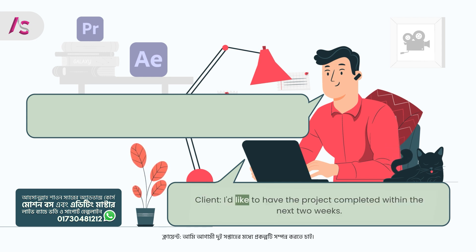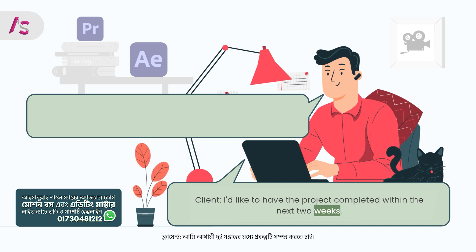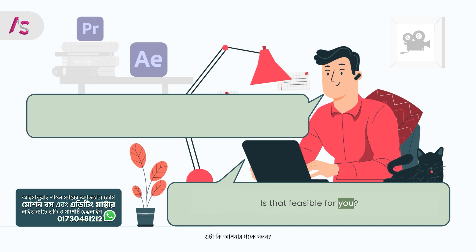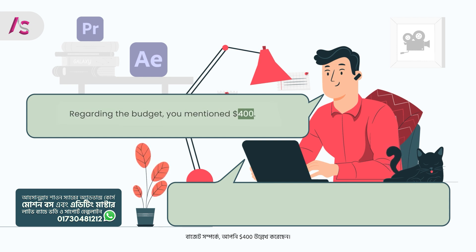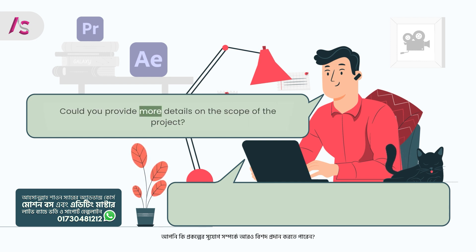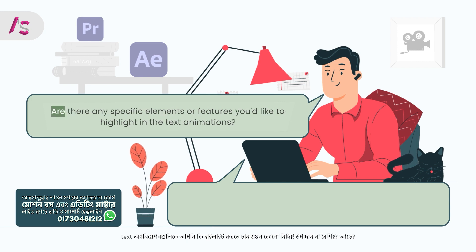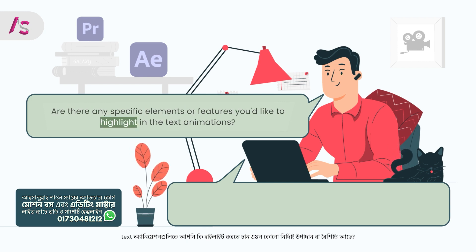Client: I'd like to have the project completed within the next two weeks. Is that feasible for you? Freelancer: Yes, that works for me. Regarding the budget, you mentioned $400. Could you provide more details on the scope of the project? Are there any specific elements or features you'd like to highlight in the text animations?